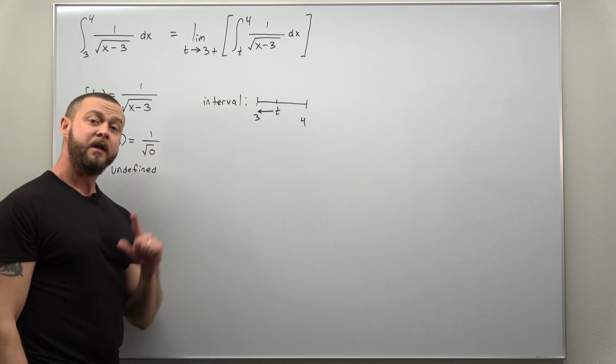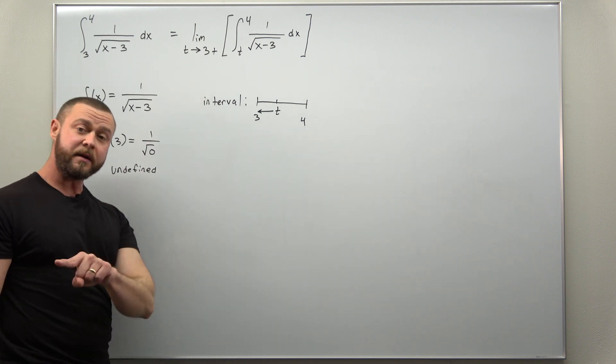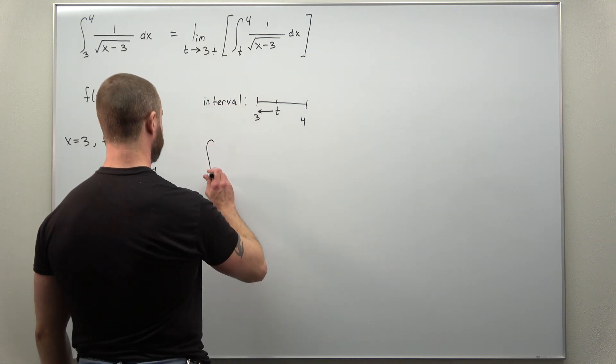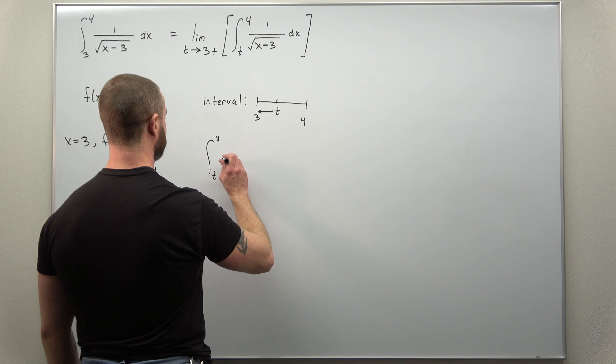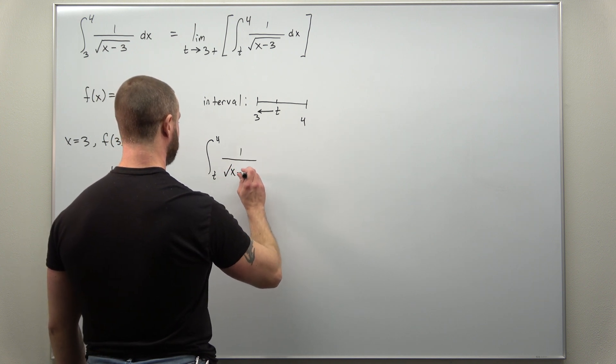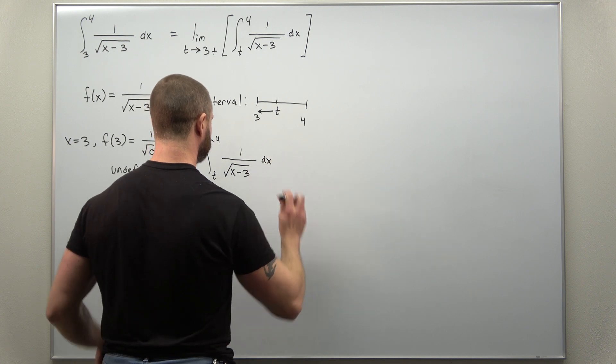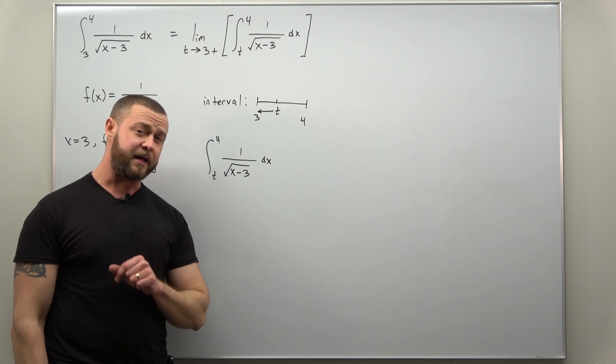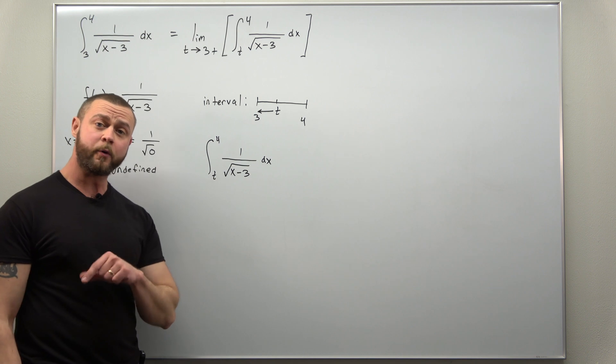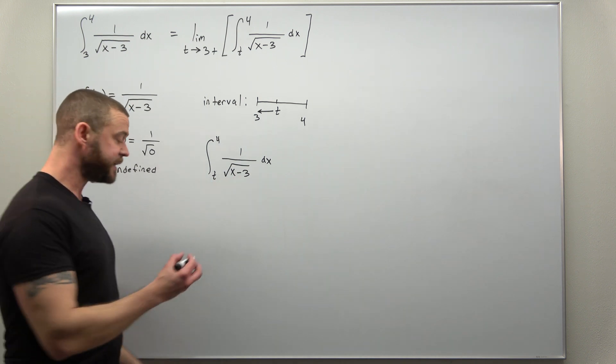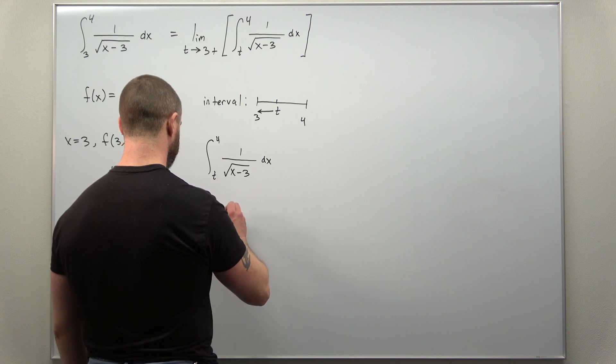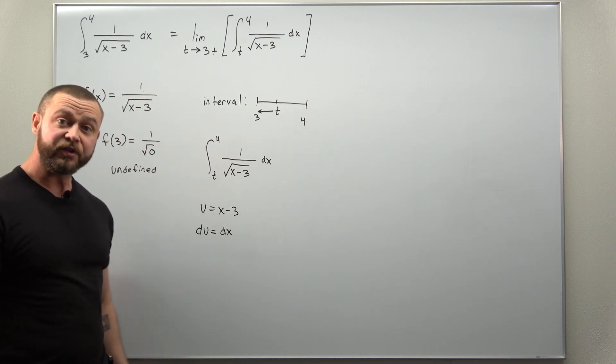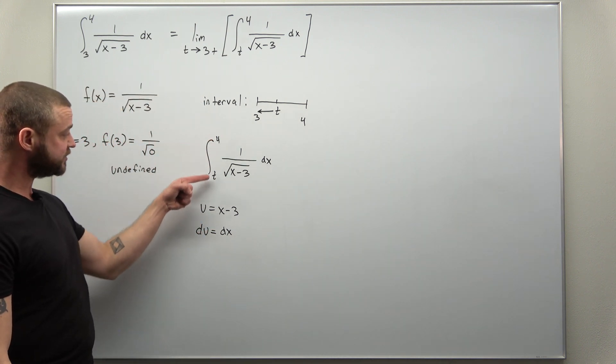Now we can go to step 1: evaluating the integral, and then we can plug all that in here and evaluate the limit as t approaches 3 from the right. First step, let's evaluate that integral from t to 4 of 1 over the square root of x minus 3. At this point in your calculus 2 course, any and all integration methods are fair game. This one we can handle with a straightforward u-substitution. We'll choose u as x minus 3.